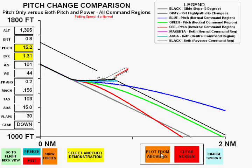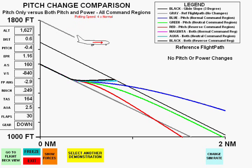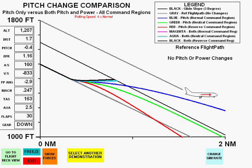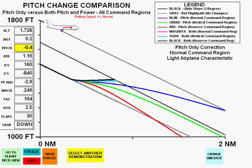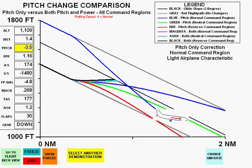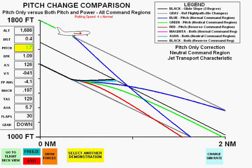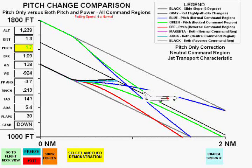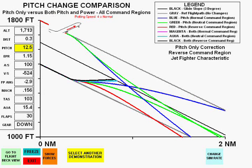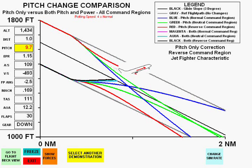We'll now repeat these plots from above the glide slope. The first is parallel to the glide slope with no pitch or power changes. First is pitch-only in the normal command region. Next is pitch-only in the neutral command region. And now pitch-only in the reverse command region. Notice the same effects as we saw in corrections from below the glide slope.